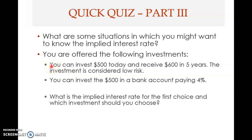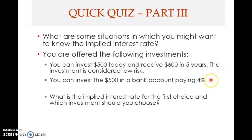Let's do a quick quiz. You are offered two investments. First, you can invest $500 today and receive $600 in five years — considered low risk. Second, you can invest $500 in a bank account paying 4% interest per year. The question is: what is the implied interest rate for the first choice, and which investment should you choose? The idea is to solve for the implied interest rate of the first investment and compare it with the 4% rate of the second.